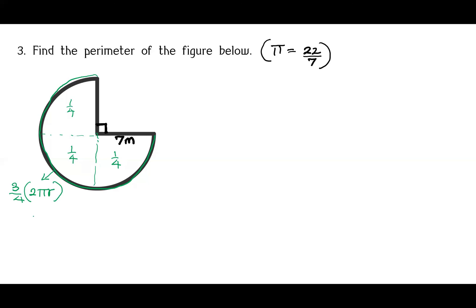So we get (3/4) × 2 × (22/7) × radius of 7. This 7 cancels with the 7 in the denominator. Then 4 ÷ 2 = 2, and 2 ÷ 2 = 1; and 22 ÷ 2 = 11. So we have 11 × 3 = 33.